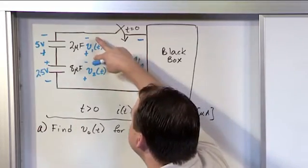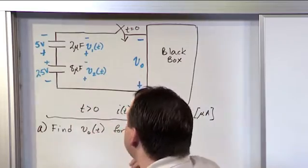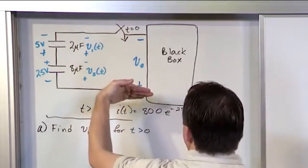Each of these voltages exists at time zero - those are the initial conditions. Now at time zero, this switch closes.